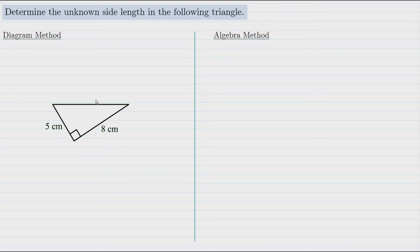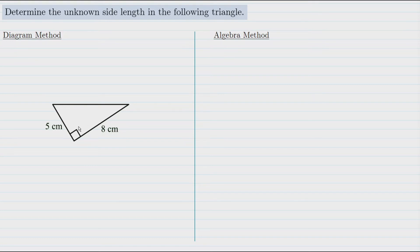Let's start with the algebra method. For either of these methods I strongly recommend you begin by giving that unknown side a label or a name. Since it is the hypotenuse of the triangle — and I know that because it's across from the right angle — I'm going to call it c. If it was not the hypotenuse I would call it either a or b.